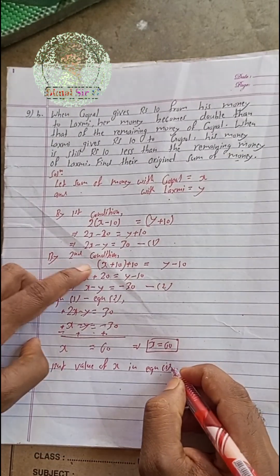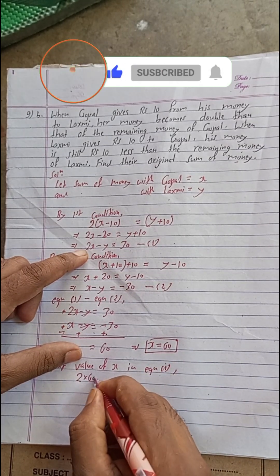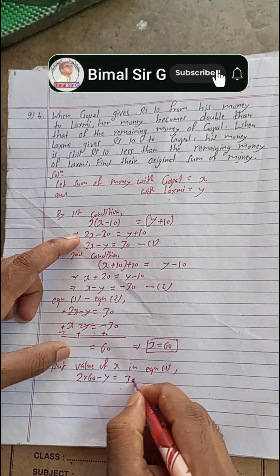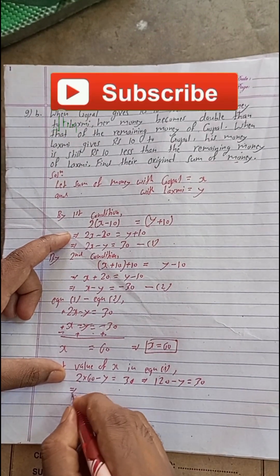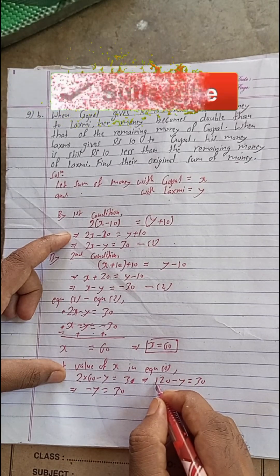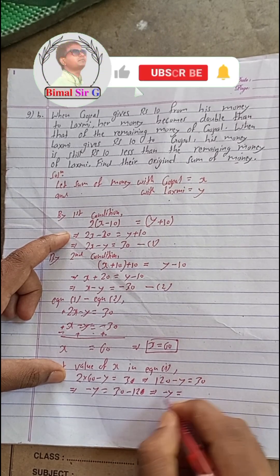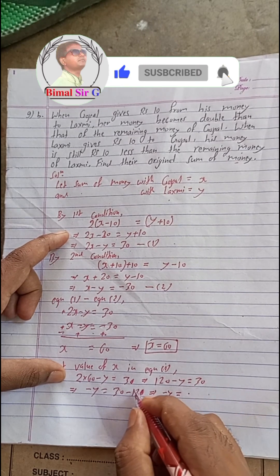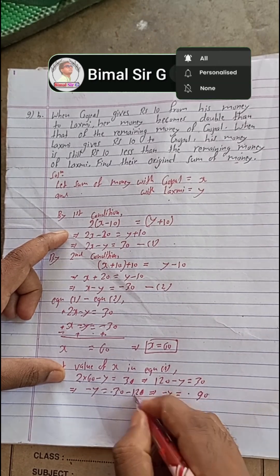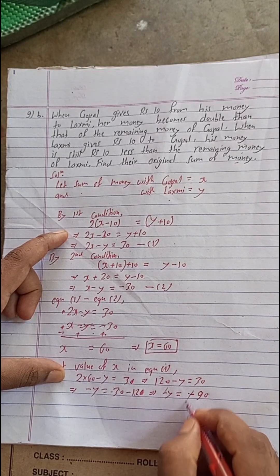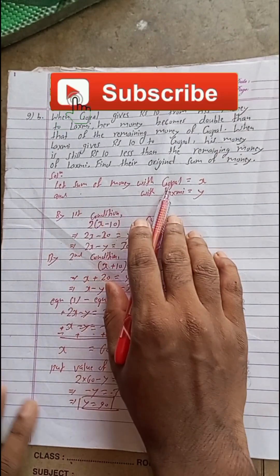Now put the value of x in equation 1. Equation 1: 2 × 60 − y = 30, which gives 120 − y = 30. Rearranging: −y = 30 − 120 = −90, so minus cancels and y = 90. The sum of money with Gopal is Rs60 and the sum of money with Laxmi is Rs90.